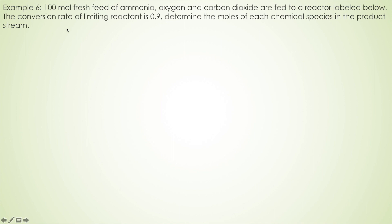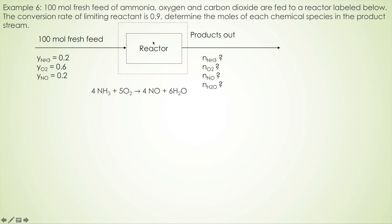A hundred mole fresh feed of ammonia, oxygen, and carbon dioxide are fed to a reactor labeled below. The conversion rate of the limiting reaction is 0.9. Determine the moles of each chemical species in the product stream.